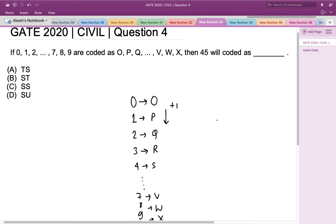Now the number which we have to decode is 45. So looking at the pattern, I can say that 4 would be coded as S and 5 would be coded as T.